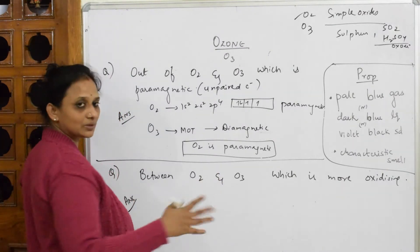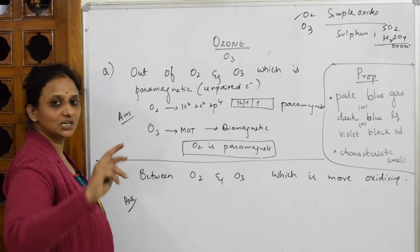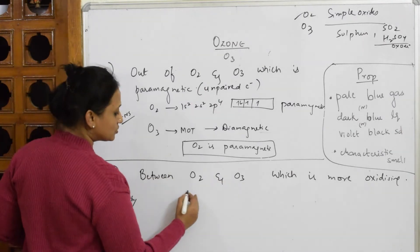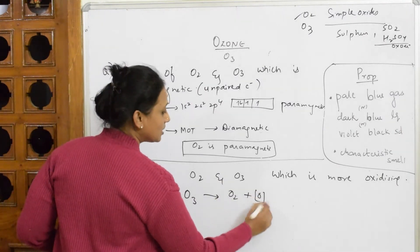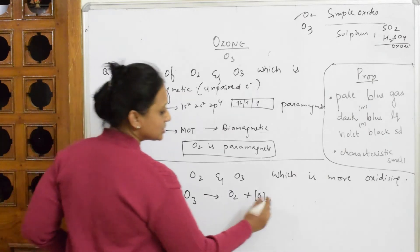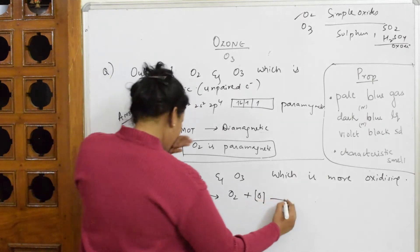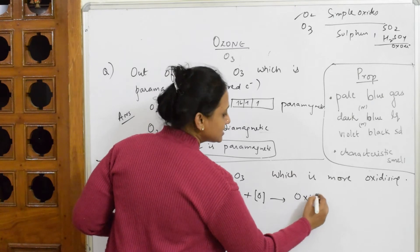So when I take oxygen, when it dissociates, it doesn't easily release nascent oxygen. But when ozone dissociates, it dissociates into oxygen plus nascent oxygen, and because of the release of this nascent oxygen, it behaves as oxidizing agent.